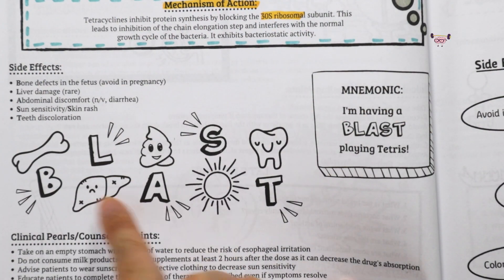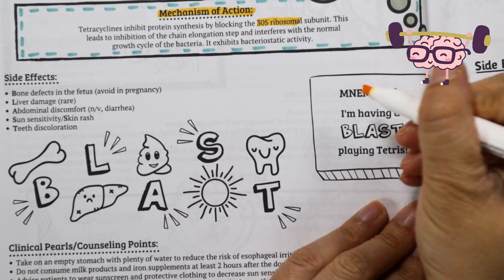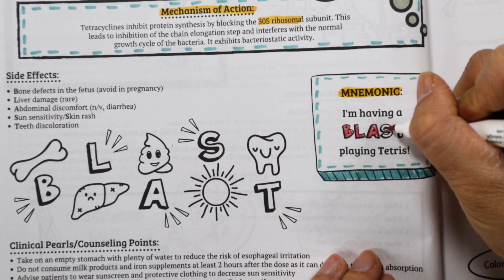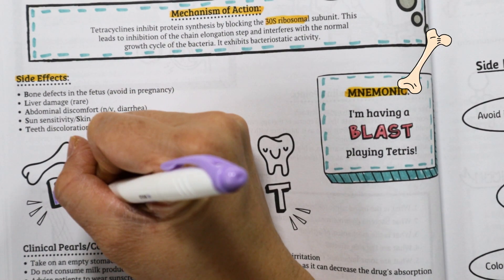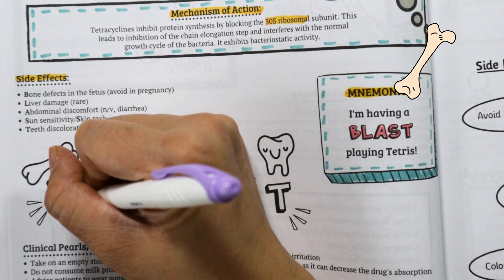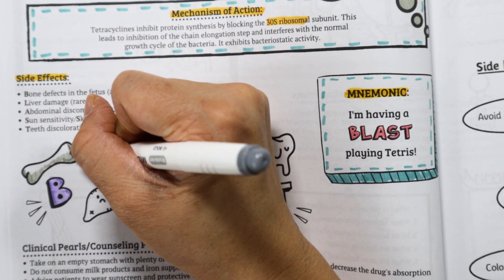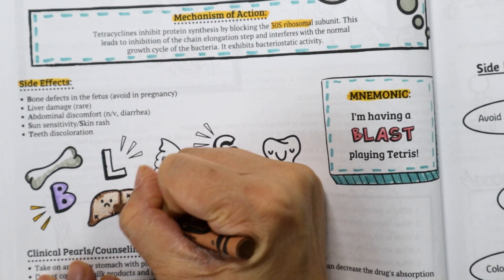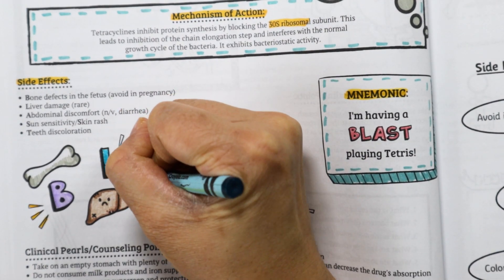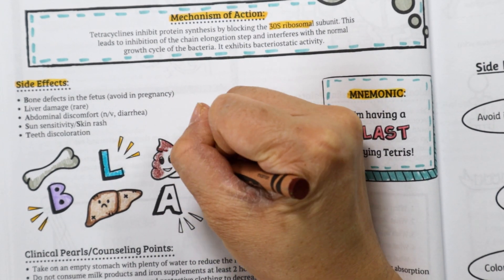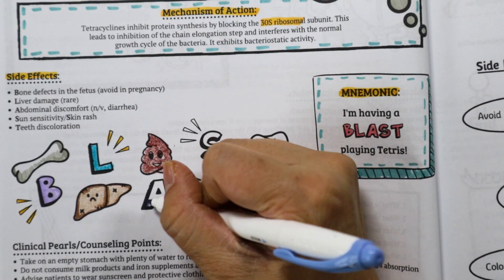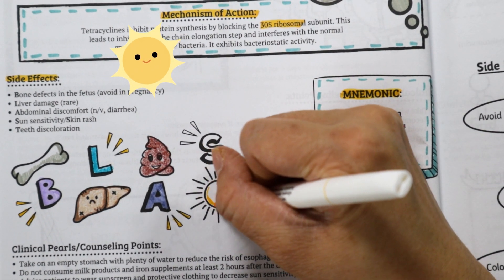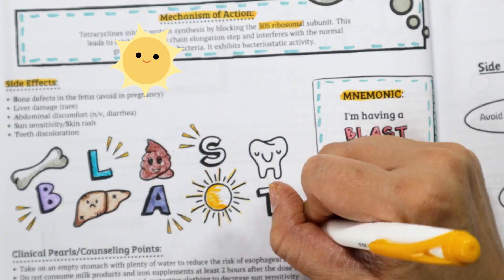For side effects, let's use our visual anchor, Tetris, to help us remember the mnemonic: 'I'm having a BLAST playing Tetris.' B is for bone defects in the fetus, so make sure to avoid using this class of antibiotics in pregnancy. L is for liver damage, which is rare. A is for abdominal discomfort, common to most antibiotics, including nausea, vomiting, and diarrhea. S is for sun sensitivity and/or skin rash.